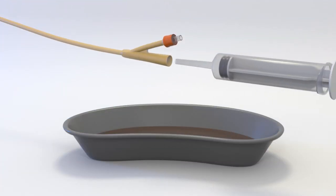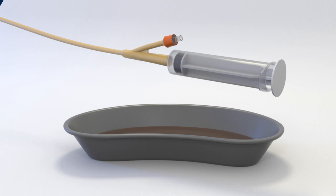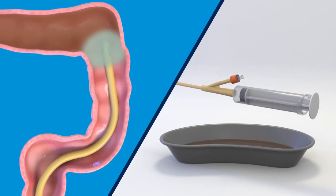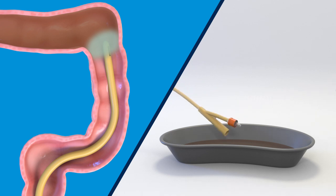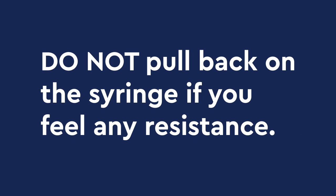If you think there is still fluid in the colon, you can reattach the syringe to the catheter and very gently pull back on the syringe to draw out the fluid. Do not pull back on the syringe if you feel any resistance.